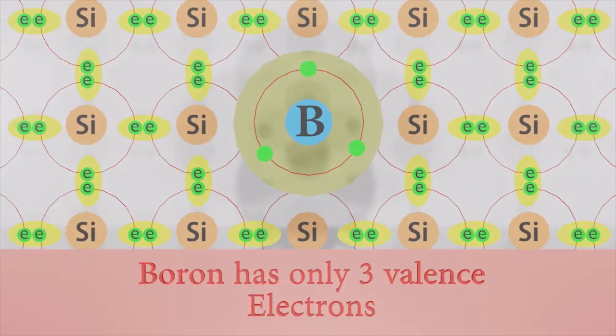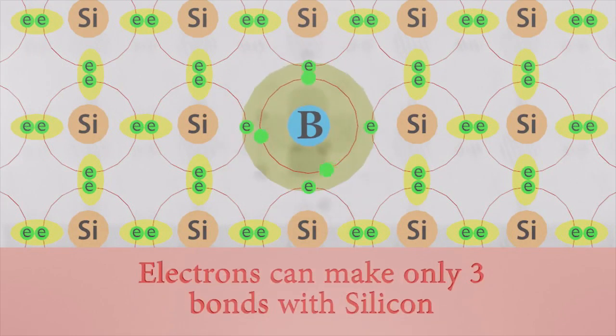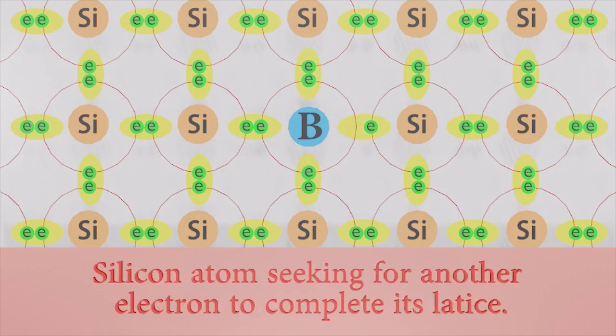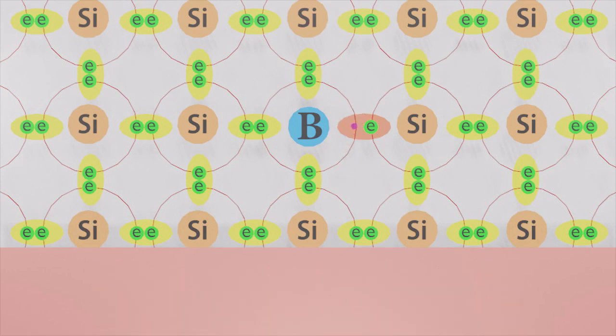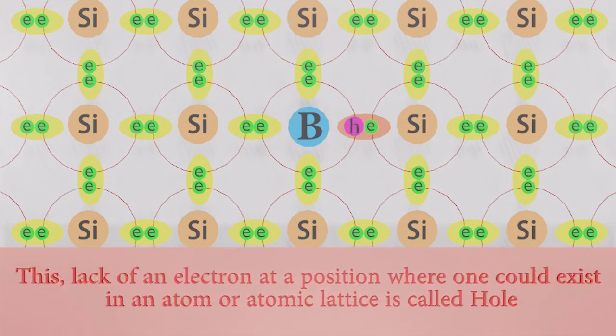Boron only has three electrons in its valence band. Boron atoms try to behave like silicon atoms, but need one more electron to complete four bonds like silicon. So it's searching for an electron. That is what we call a hole - simply a lack of an electron.